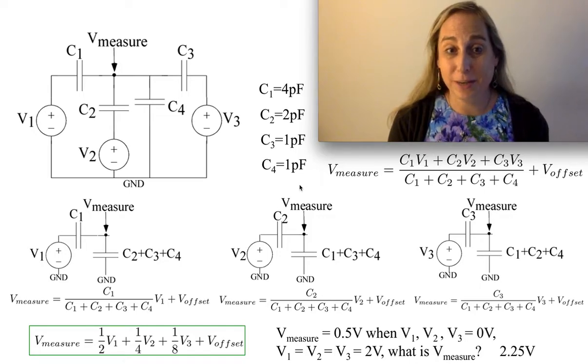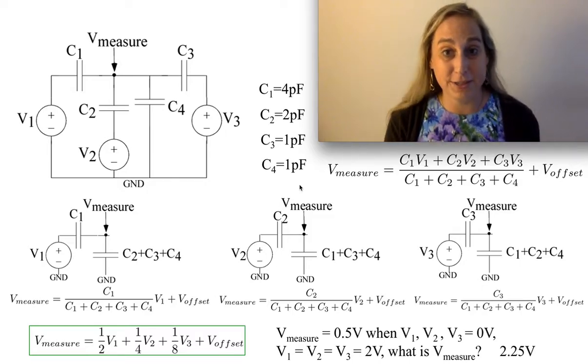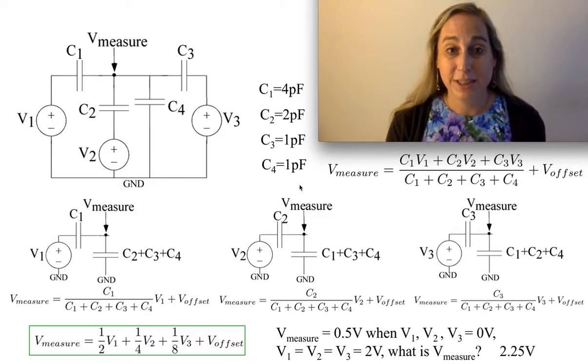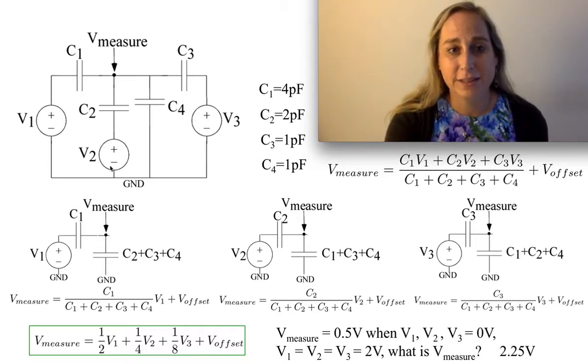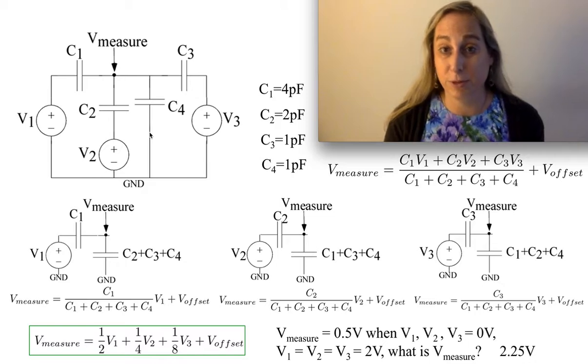So I want to talk about an interesting circuit now where we have voltage sources and capacitors. There's no dependent sources, so it's just a simple circuit, yet we have three different sources and multiple different capacitors. How do we want to approach this?